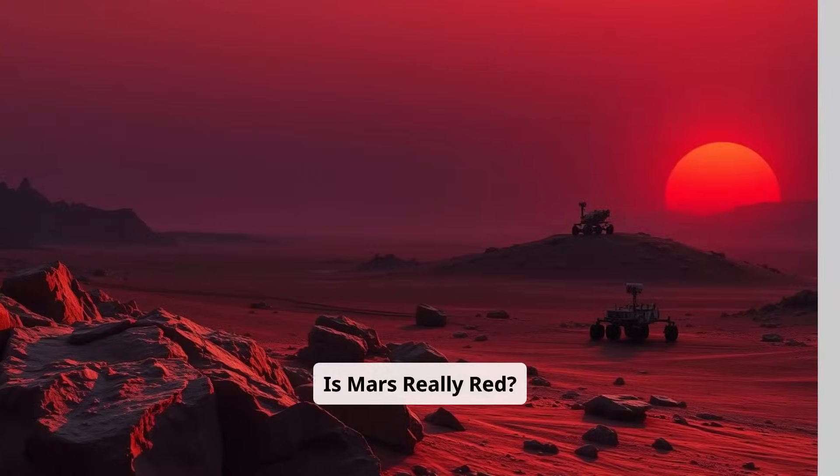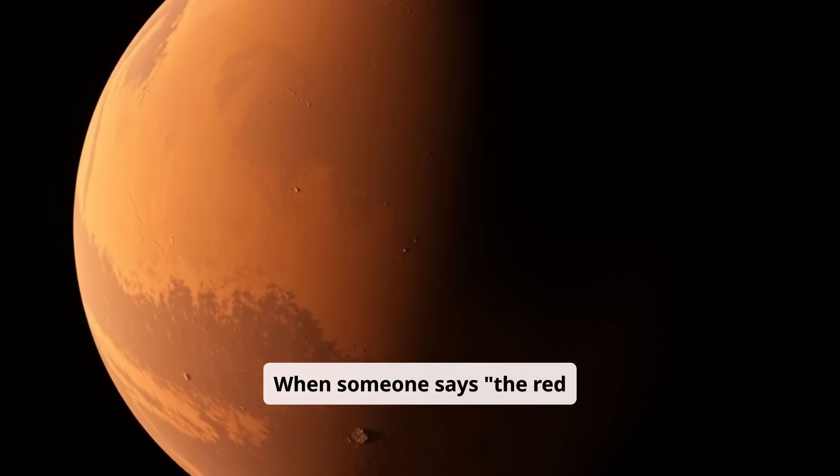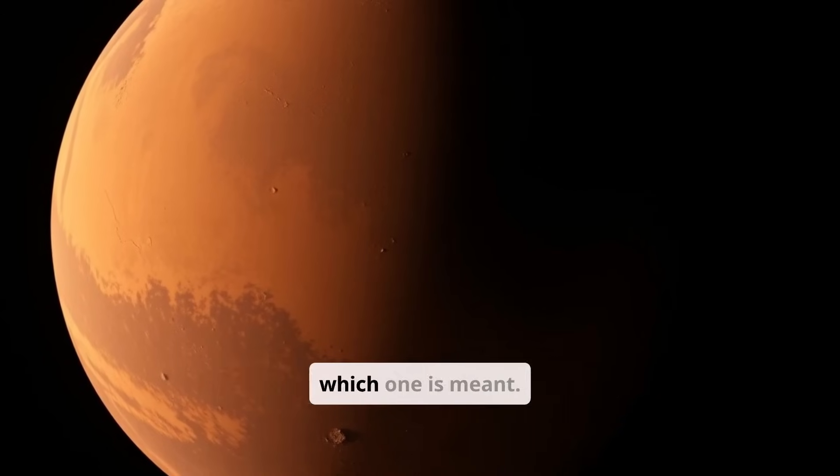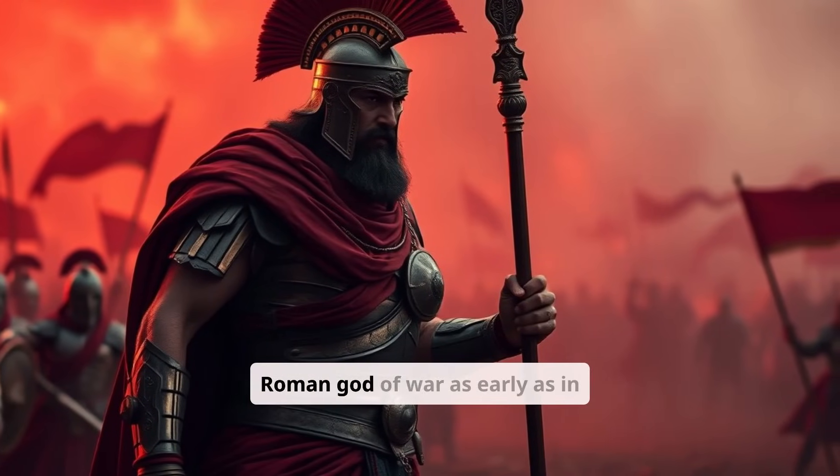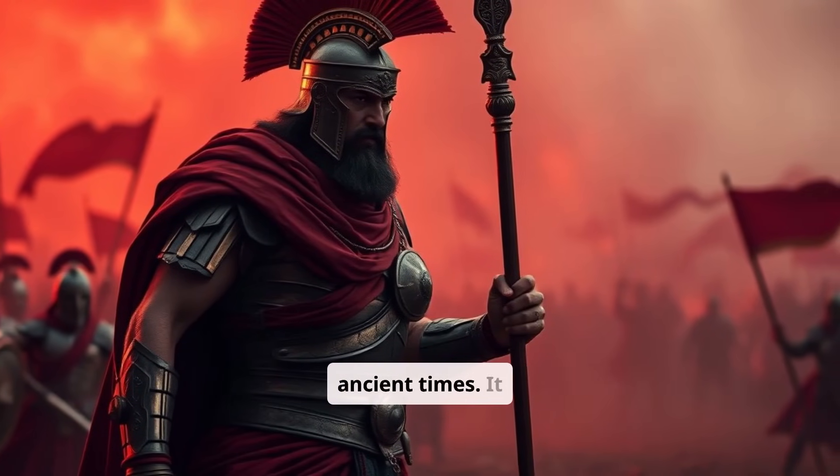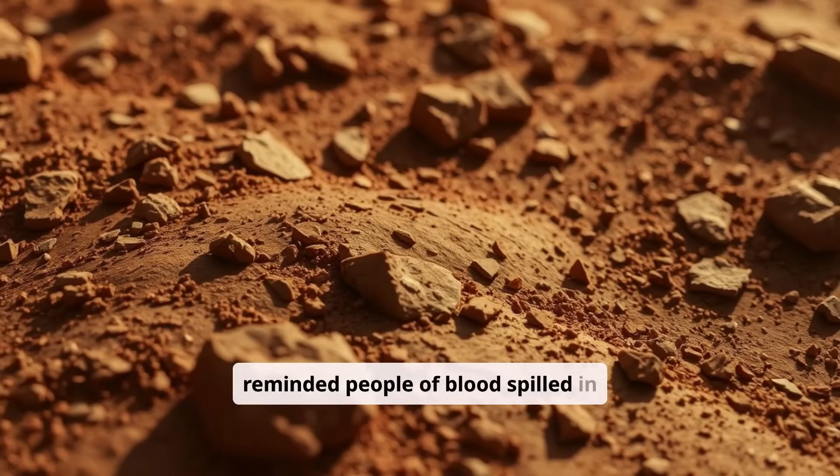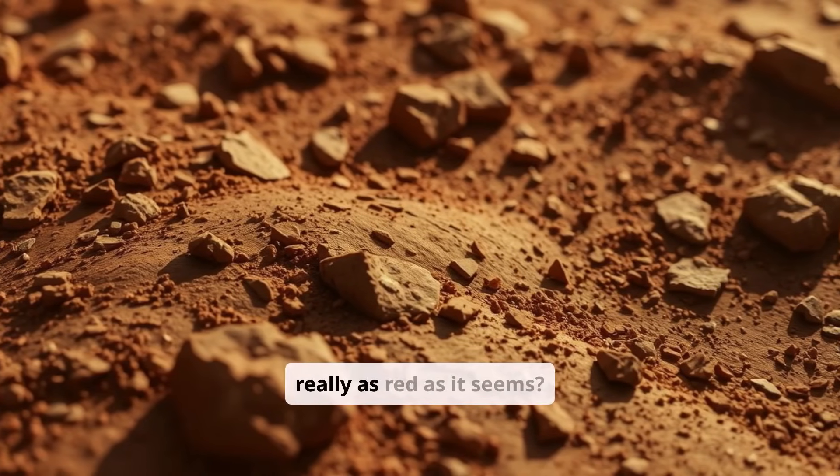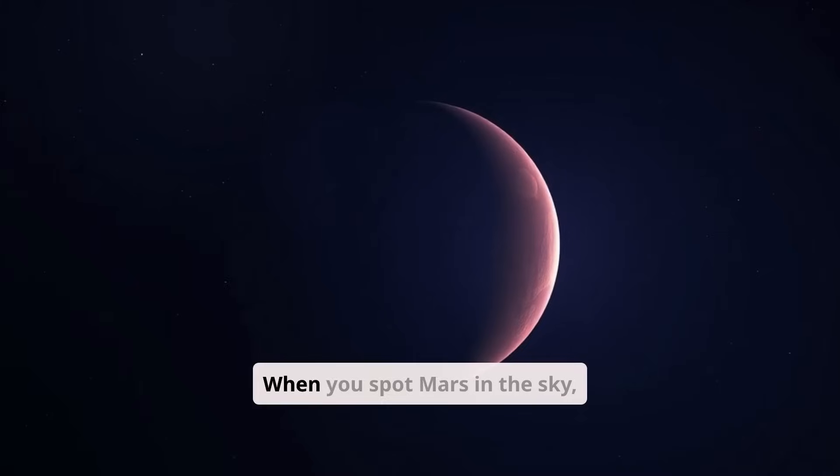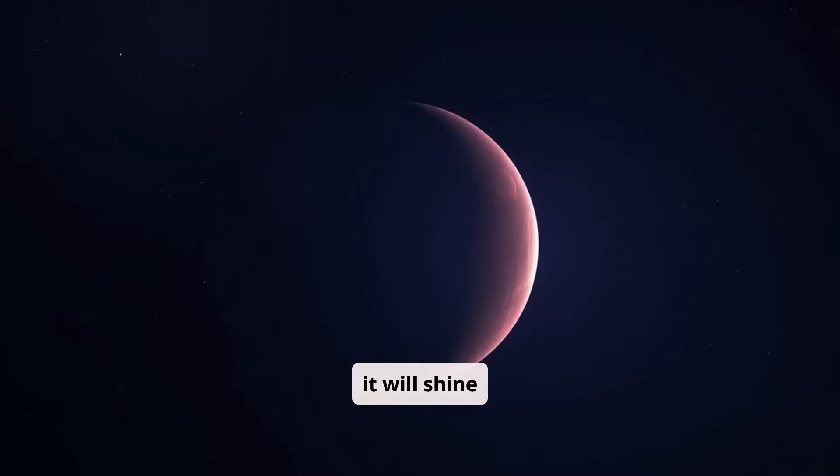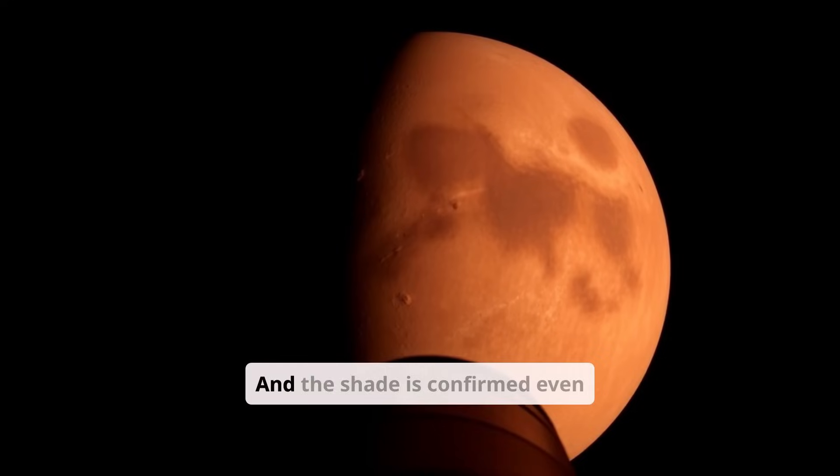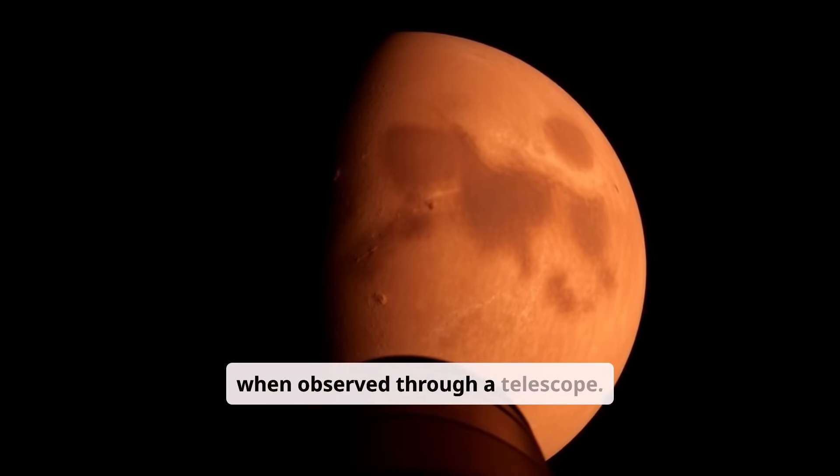Is Mars really red? When someone says the red planet, everyone immediately knows which one is meant. That's why it was given the name of the Roman god of war as early as in ancient times. It reminded people of blood spilled in battles. But is Mars really as red as it seems? When you spot Mars in the sky, it will shine reddish purple. And the shade is confirmed even when observed through a telescope.